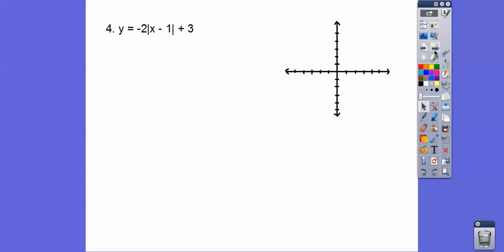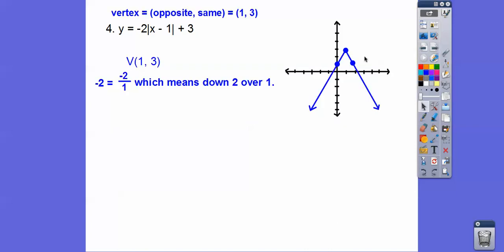Let's try one with more numbers. Using opposite-same, the vertex is at positive 1, 3 — go over 1, up 3. A is negative 2, so it opens down: go down 2, over 1 on both sides from this vertex. There it is — down 2, over 1 on both sides.